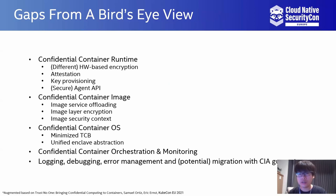We list a few of the gaps that original containers need to fill from a bird's eye view. Firstly, confidential container runtimes need to adapt to different hardware-based encryption, and should also support attestation, key provisioning, and secure agent APIs strictly limited to confidential containers. For confidential container images, image service offloading, layer encryption, and security contexts need to be added. For confidential container OSes, minimizing the TCB and unified enclave wire abstractions are the top two requirements. Confidential container orchestration and monitoring — especially logging, debugging, error management, and potential migration with confidentiality guarantees — should also be considered.